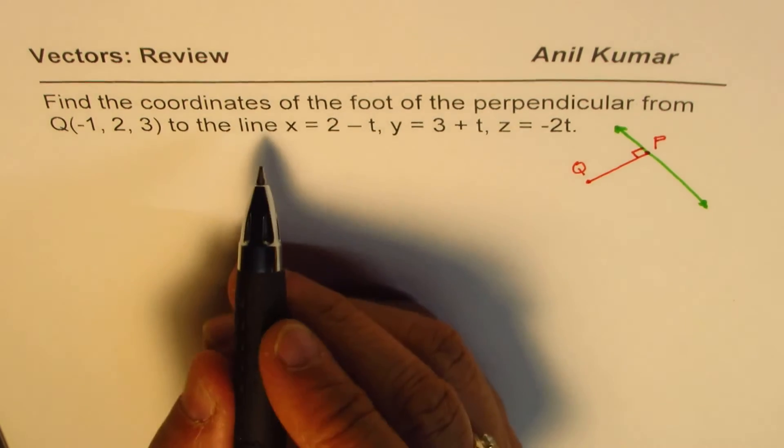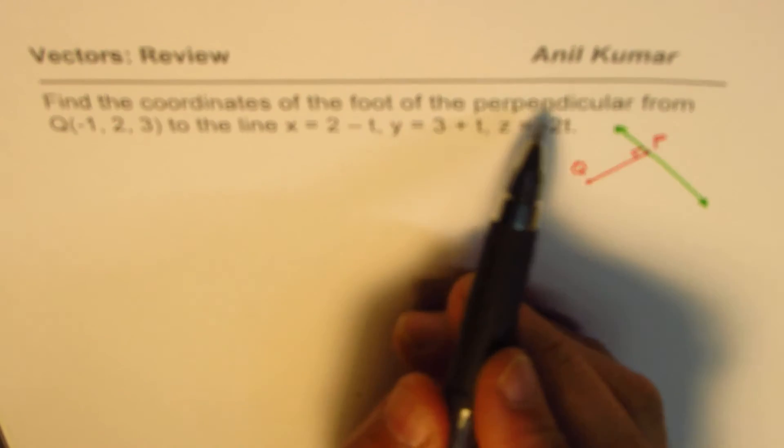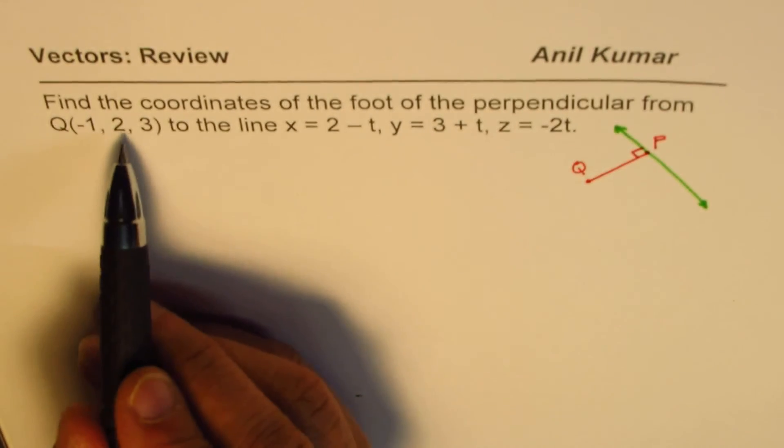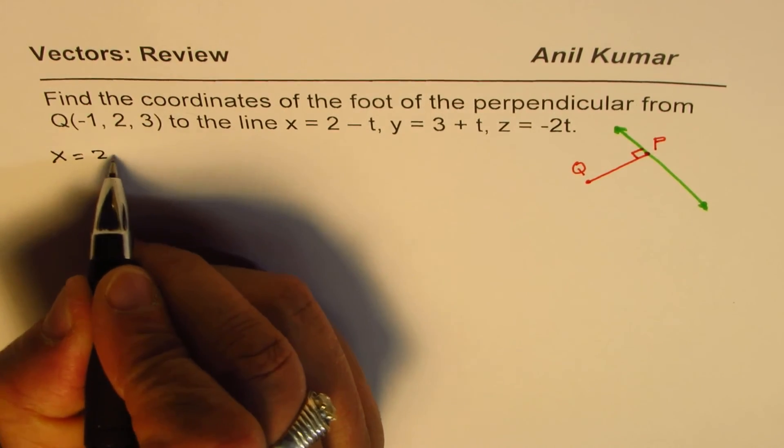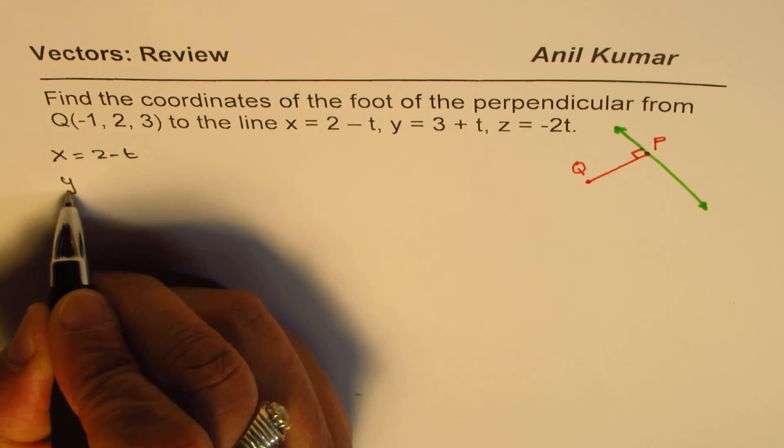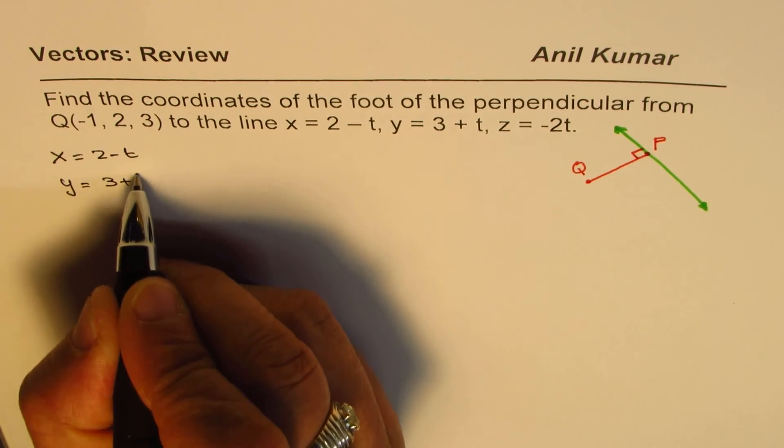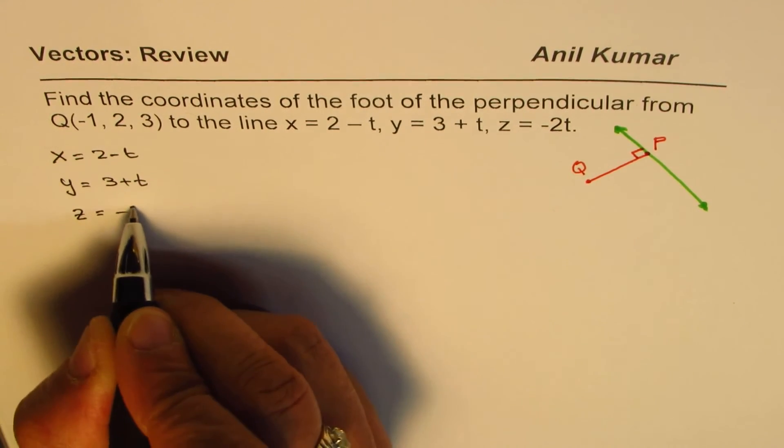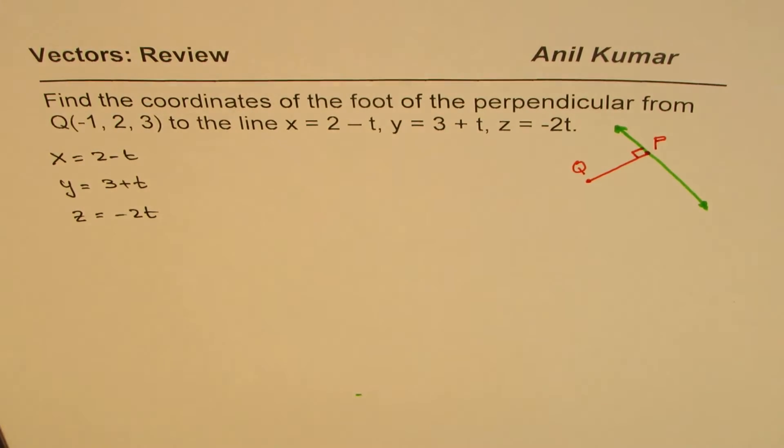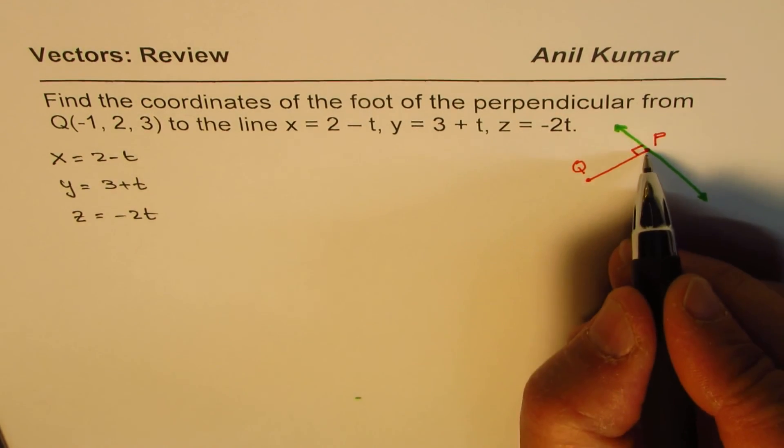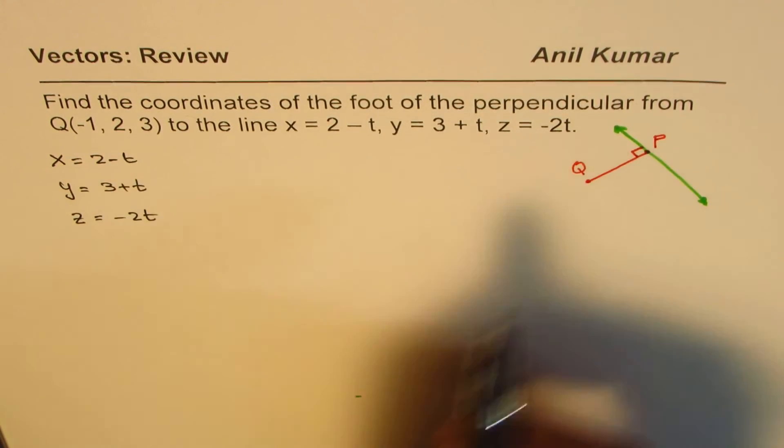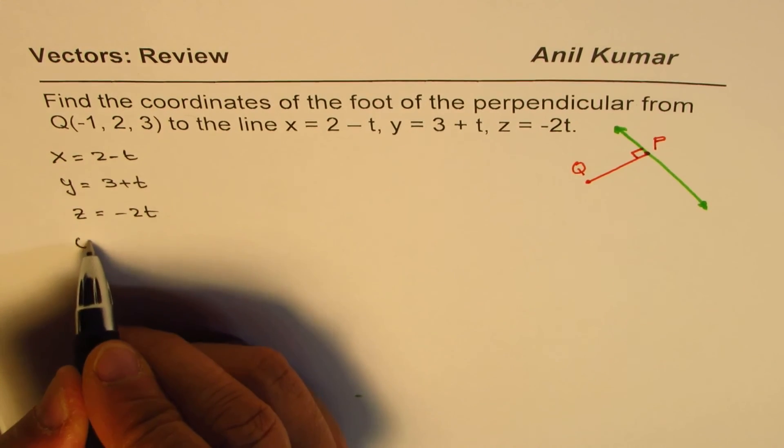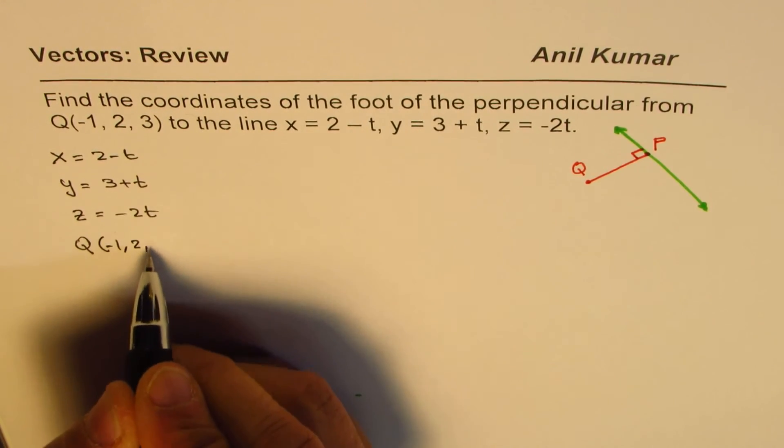So what we are given here is, we need to find foot of the perpendicular from point Q to the given line. And the equation of the line is x = 2 - t, y = 3 + t, and z = -2t. So in parametric form, that is the equation. So a point P, in general, could be written in this form. So that could be the coordinates for point P. And we are given the point Q as (-1, 2, 3).